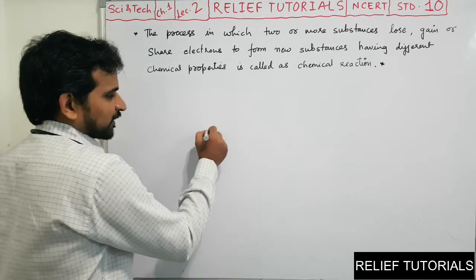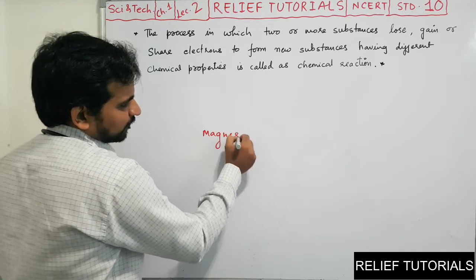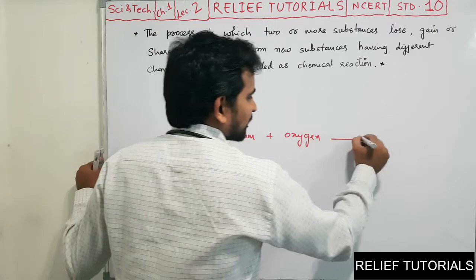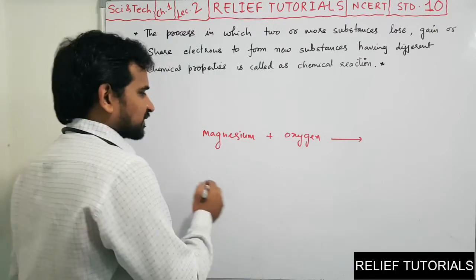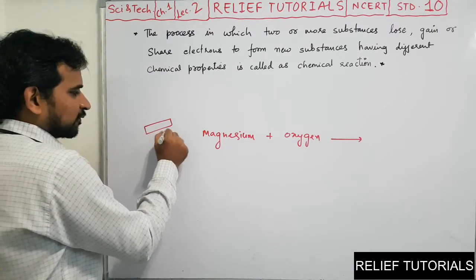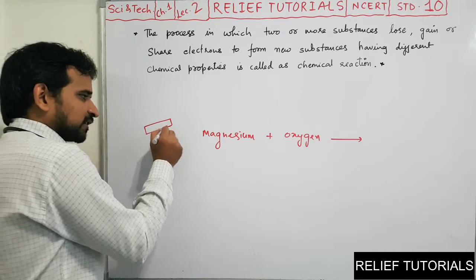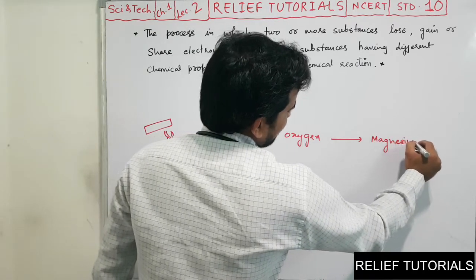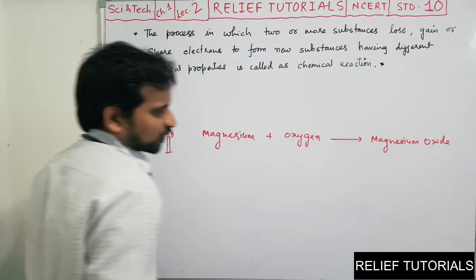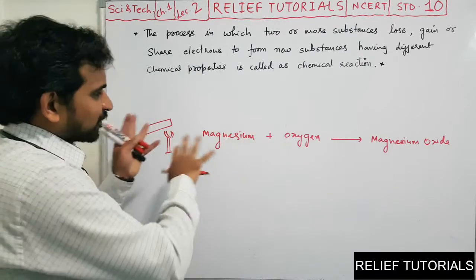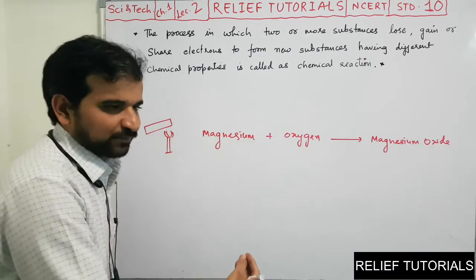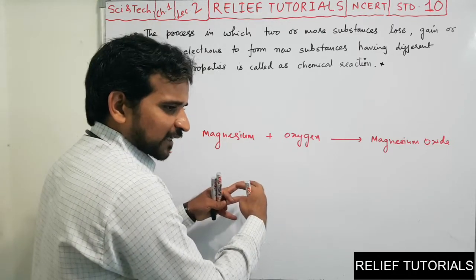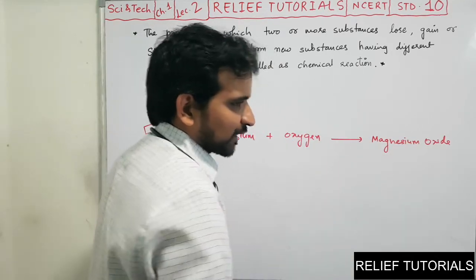For example, magnesium reacts with oxygen. It's a very old experiment — a magnesium strip is burnt in the presence of oxygen. So what happens? Magnesium reacts with oxygen and it forms magnesium oxide. This is the representation of a chemical reaction. We are not writing word forms; we are writing the names of the substances taking part in the reaction and the name of the substance forming at the end.